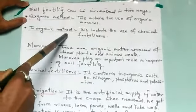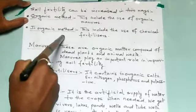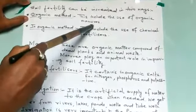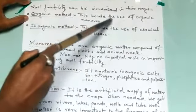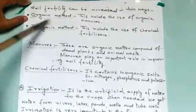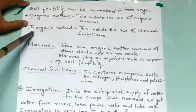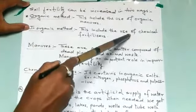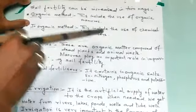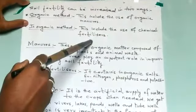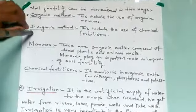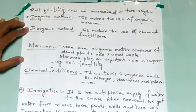These two additional methods are the organic method and the inorganic method. The organic method includes the use of organic manure. The inorganic method includes the use of chemical fertilizers — made by human beings — to increase soil fertility.